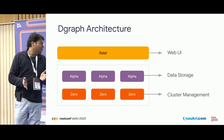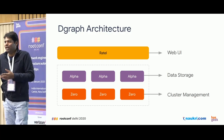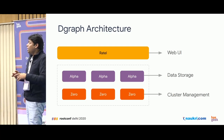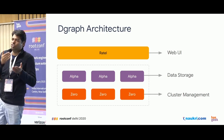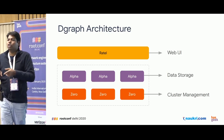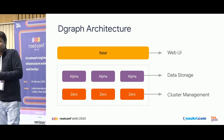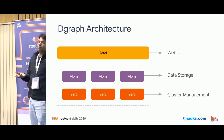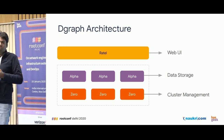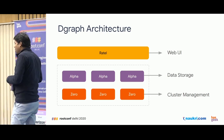The DGraph architecture is fairly simple. You have a Zero layer — which can be one or multiple instances — that manages your cluster: how many clusters you have, how many storage engines, etc. Then you have an Alpha layer, which is the actual storage layer that talks to the Zero layer for coordination. Together these make up the DGraph cluster. There's also Rattle, a UI application that lets you interact with your DGraph cluster, showing information like how many predicates you've created, how many UIDs have been generated, and what data is available in those predicates and UIDs.